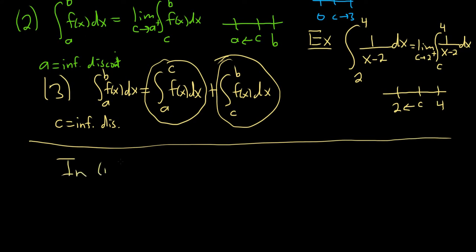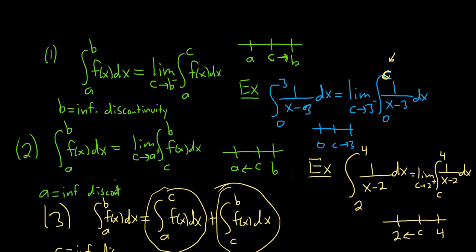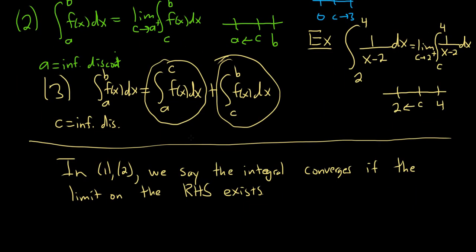So in one and two, we say the integral converges if the limit on the right-hand side exists. So what does it mean for it to exist? It means it has to be equal to a number. So if it's equal to a number, then we say the limit exists and the integral converges. If it's equal to infinity or negative infinity or something that doesn't make sense, then we'll say that the integral does not converge. In other words, we'll say it diverges. So otherwise, it diverges.